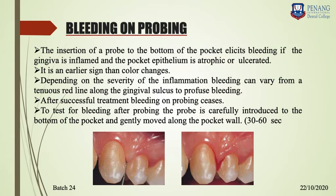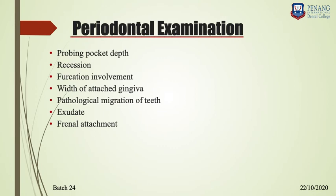Depending on the severity of inflammation, bleeding may vary from pinpoint bleeding to profuse bleeding. If inflammation is mild, it results in pinpoint bleeding; if severe, there will be profuse bleeding. To test bleeding on probing, carefully put your probe to the bottom of the pocket and gently move along the pocket wall, then wait 30 to 60 seconds to evaluate bleeding. The minimum time to wait is 30 seconds.